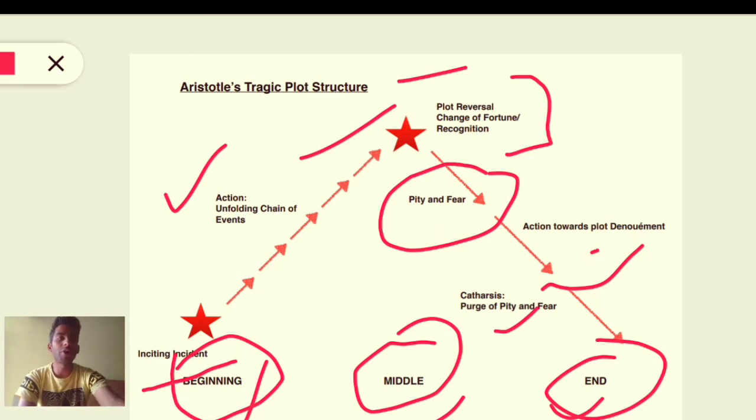Action towards plot denouement. Denouement is also, we can say, the ending part. The last part ends with denouement. So there are three parts in short: beginning, middle and an end. The topmost part in Aristotle's tragic plot structure is plot reversal or recognition.